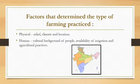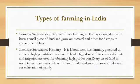Types of farming in India. First, primitive subsistence or slash-and-burn farming. It is called slash-and-burn farming because farmers clear, slash, and burn a small piece of land and grow cereals and other food crops on it to sustain themselves. It is called primitive subsistence because farmers in this type still utilize old primitive tools and techniques for farming and cultivation to sustain themselves and their own family.